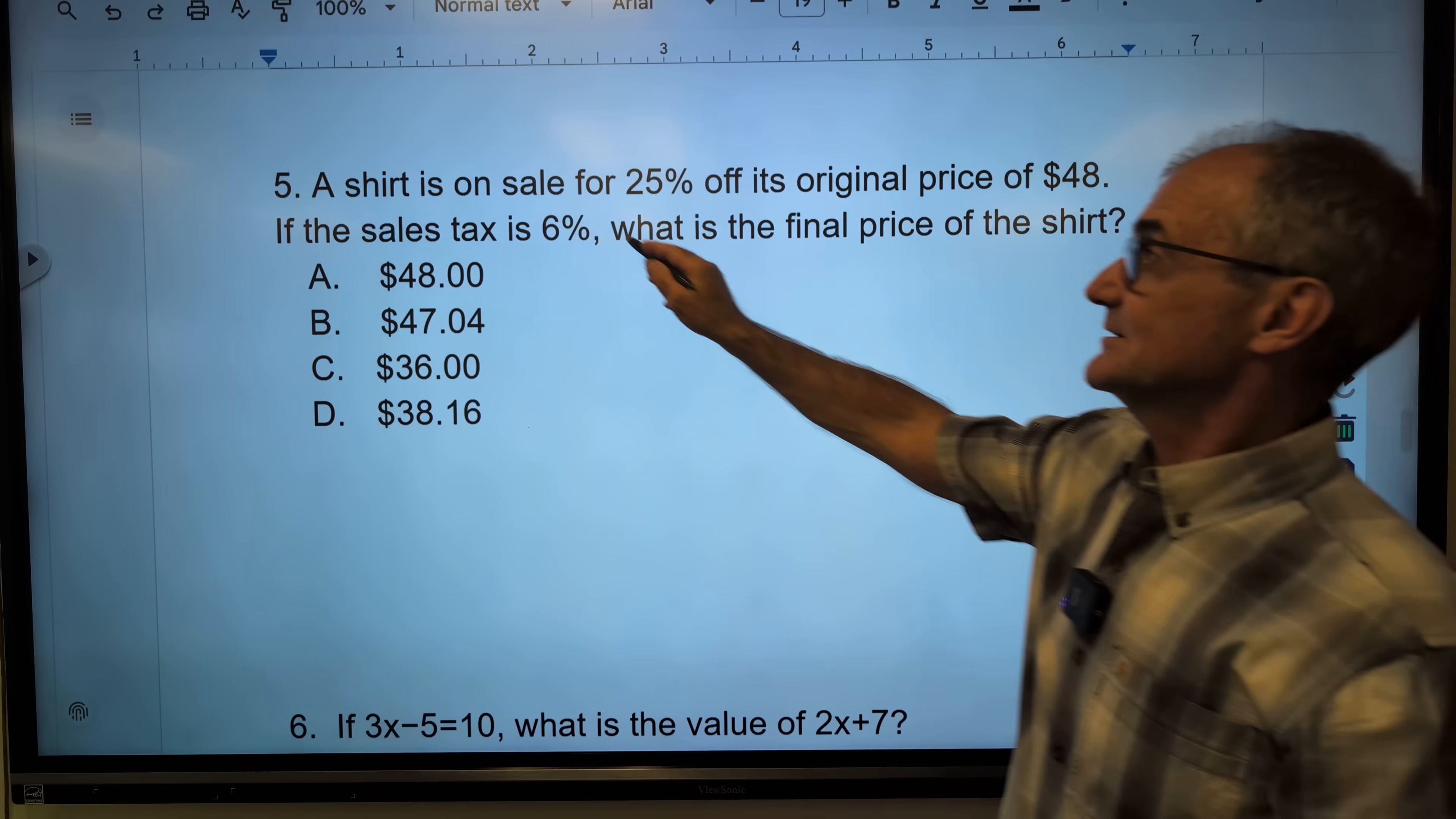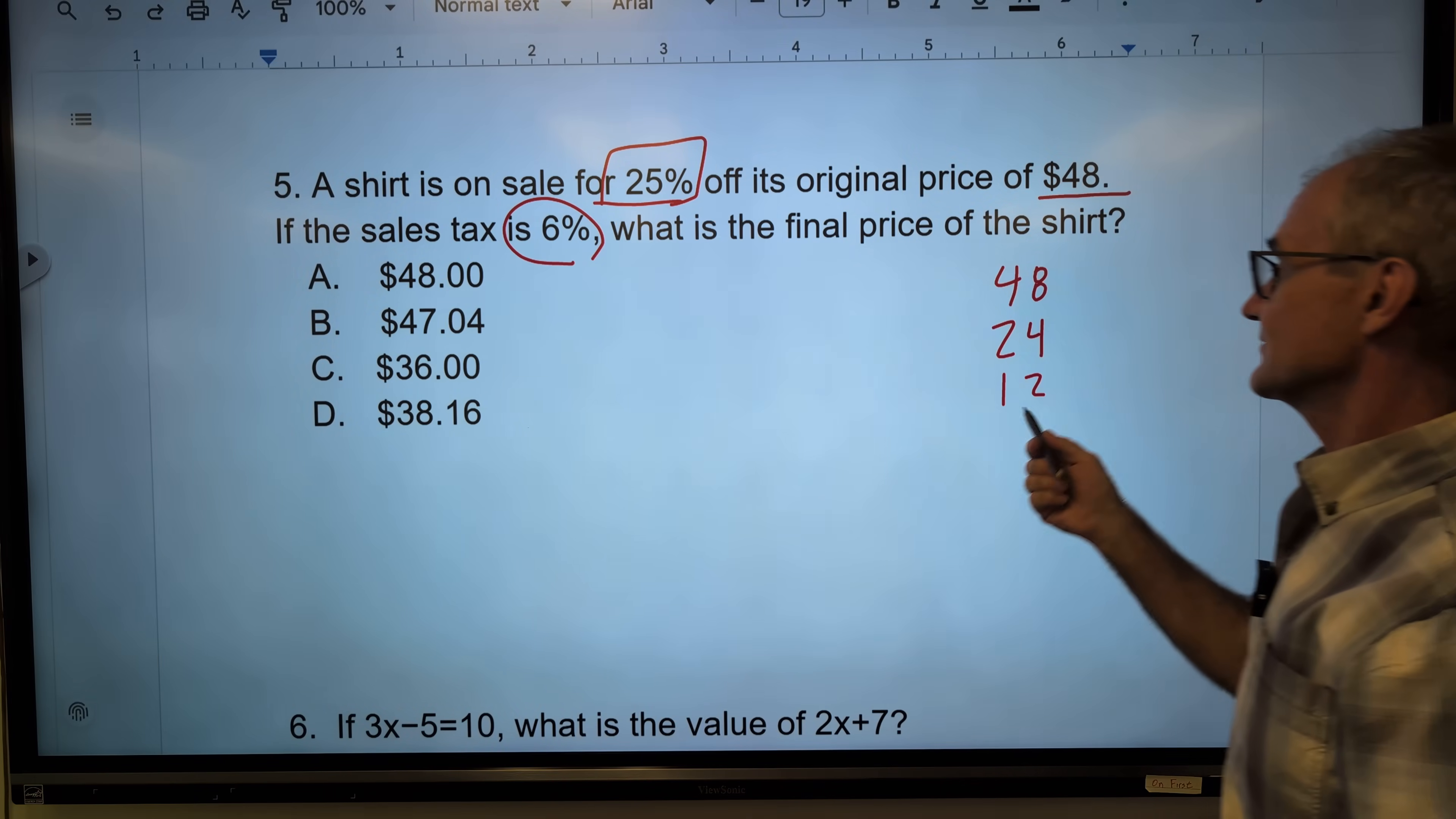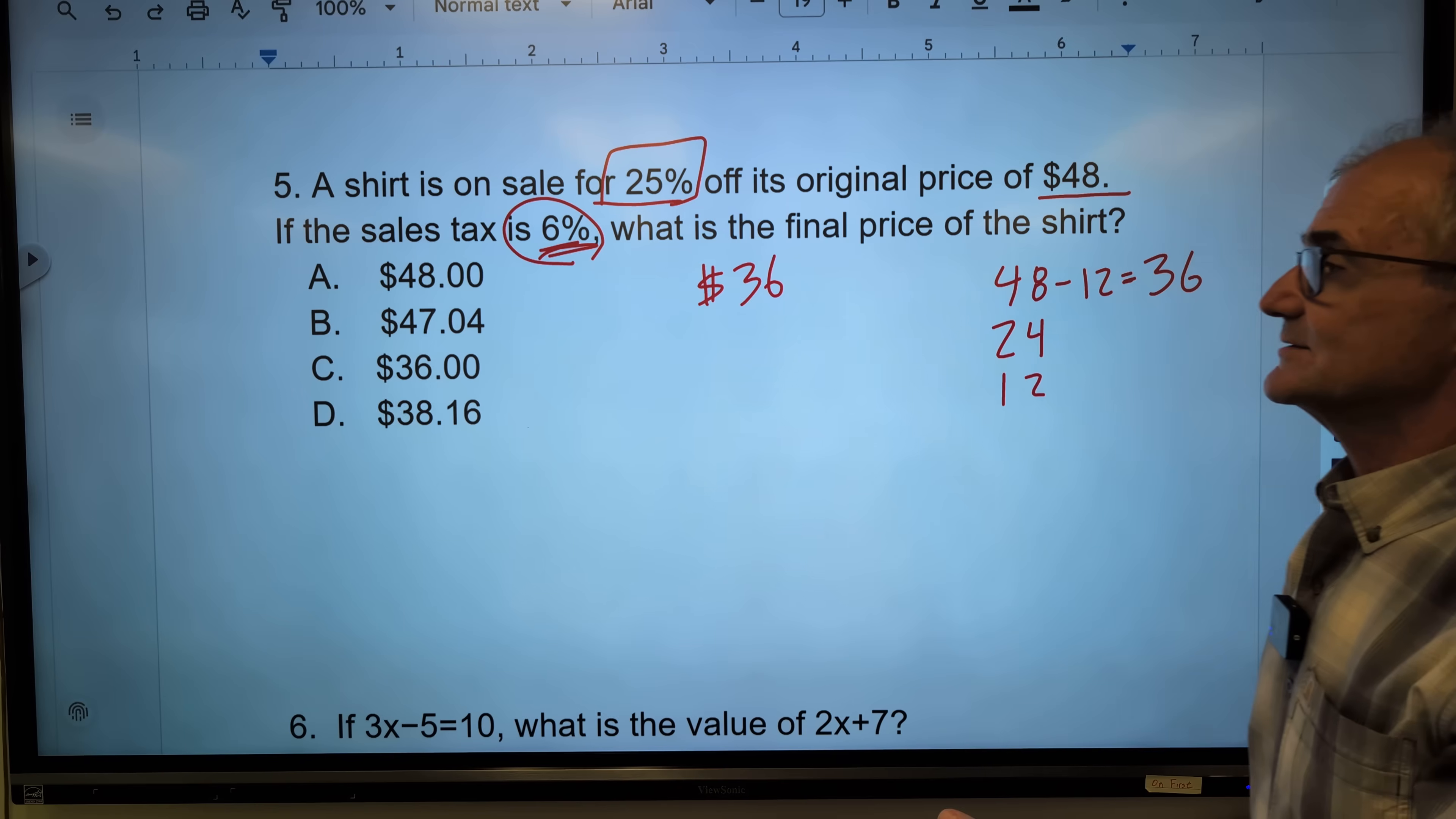Number 5. A shirt is on sale for 25% off its original price of $48. Sales tax is 6% - that's a separate problem. So let's figure this out first. 25% off of 48. I have 48, half of 48 is 24, 12 is half of a half or a quarter. It is one quarter off. So $12 is the amount off. So I do 48 minus 12 to give me 36. The shirt is $36. That's problem number one. Problem number two, the sales tax is 6%, so I got to take 6% and add it to there. Before I do that, let me look at my answers. I know it's not 36, it is just a little bit more than 36. 10% more would be $3 more, but it's about half that. Only answer that's going to work is answer D.